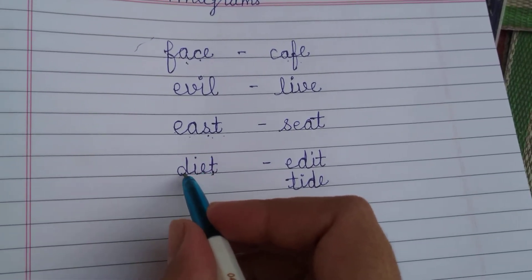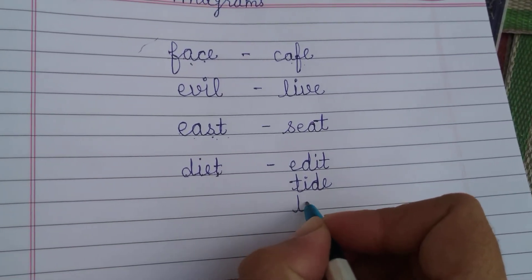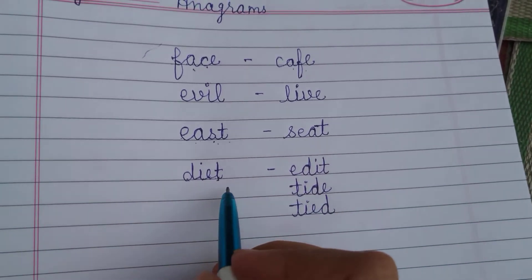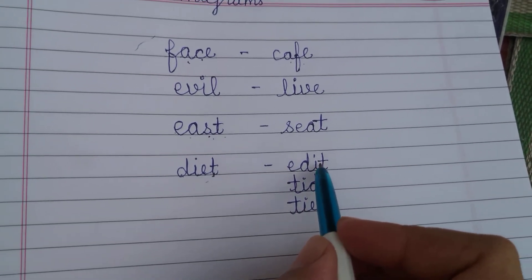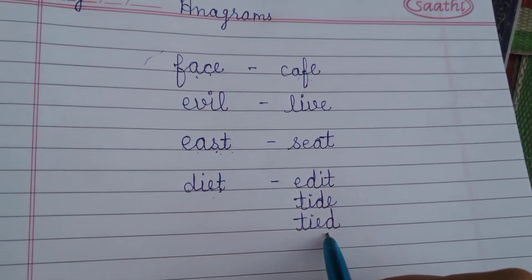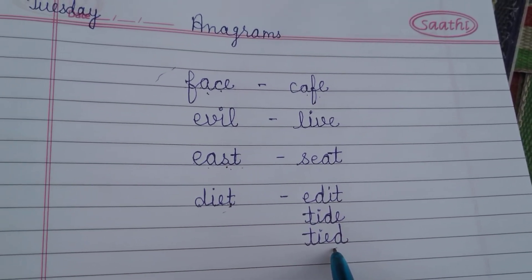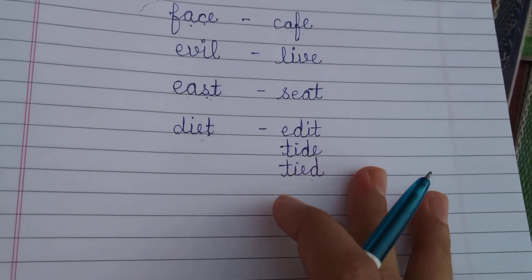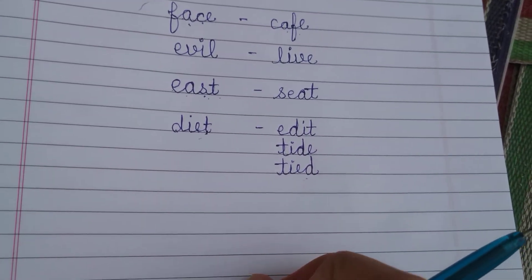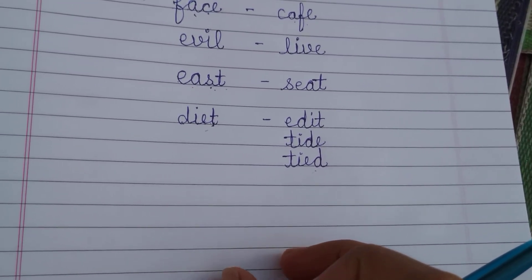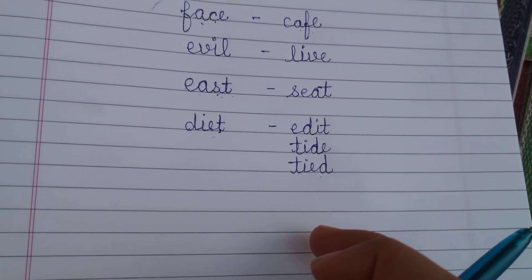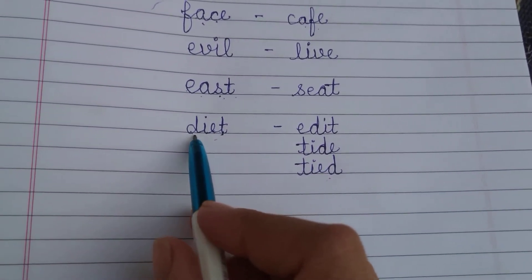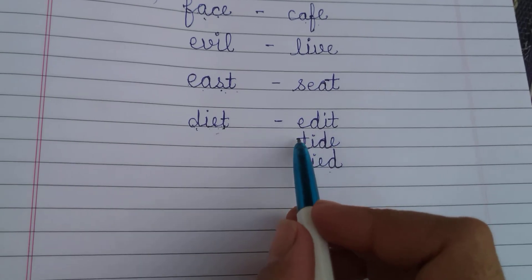T-I-E-D: tied. From one meaningful word we created three different meaningful words — these are anagrams. Two words or phrases that are spelt with the same letters but in a different order — same letters but in different order.